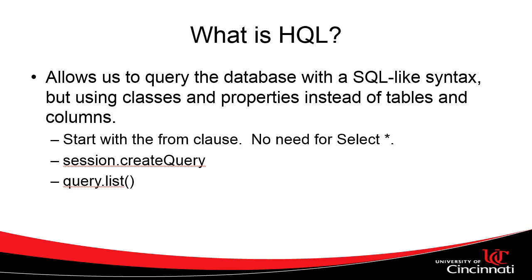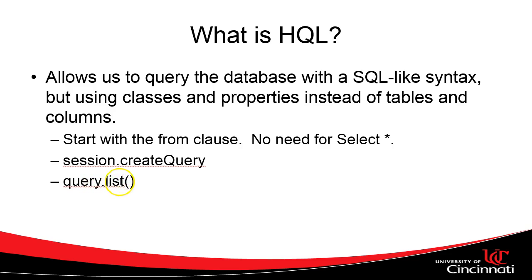What we'll typically do is create a query object, and then we'll run our query inside that query object. To create our query object, we're going to get a Hibernate session just like we did in a previous video when we were saving information. At that point we did session.save; at this point we're going to do session.createQuery, providing our HQL syntax as a parameter to this createQuery method. When we want to run the query, we're going to say query.list.